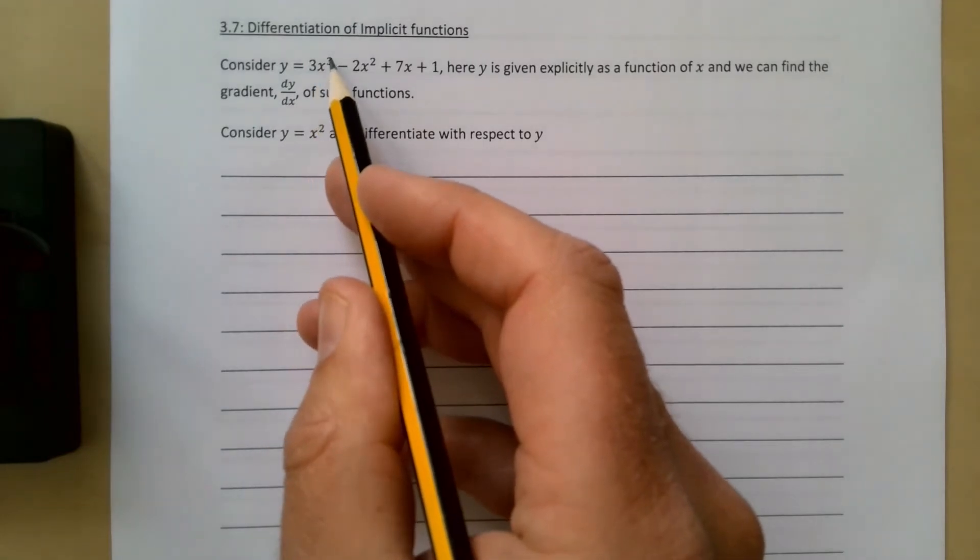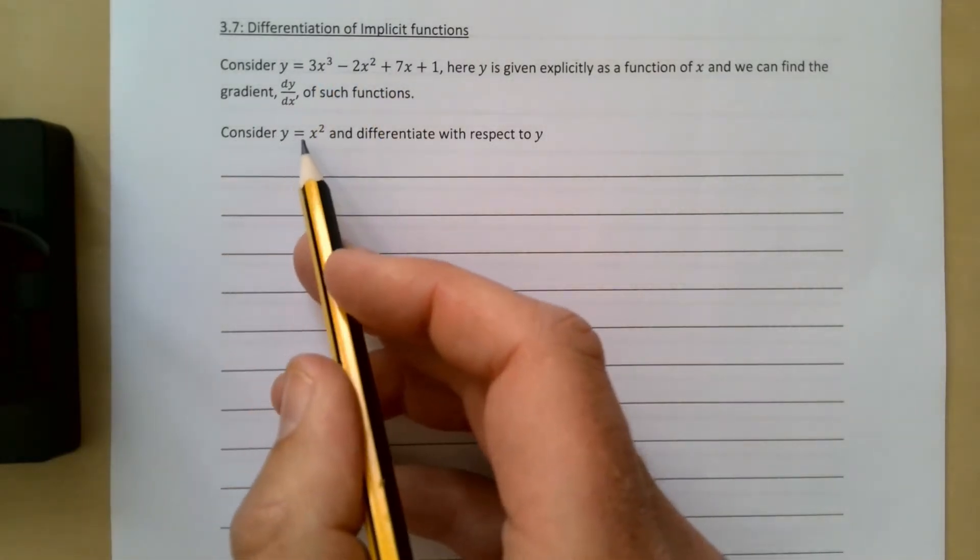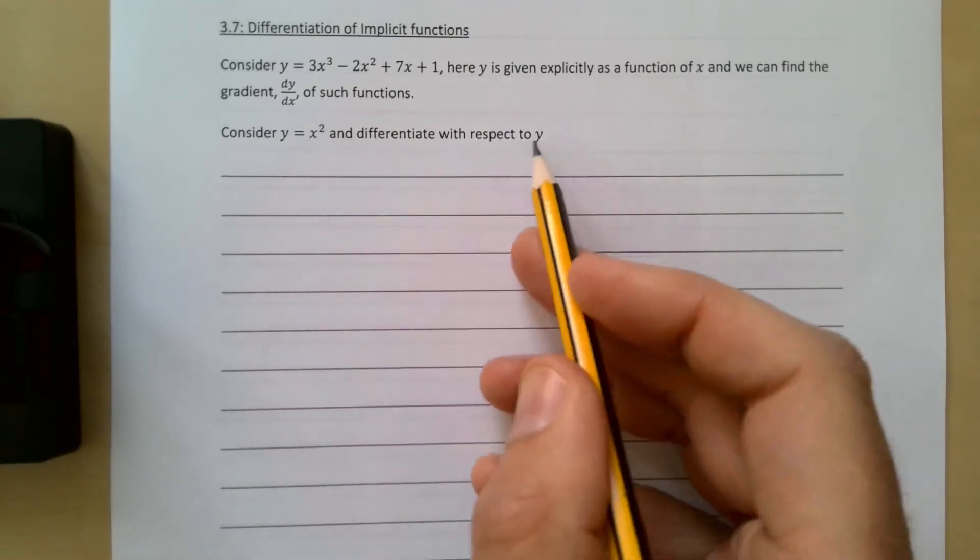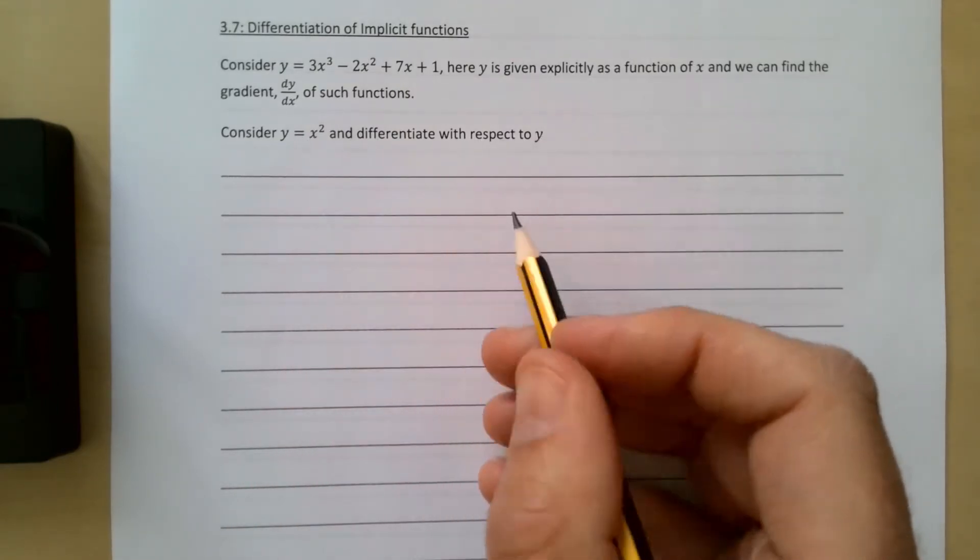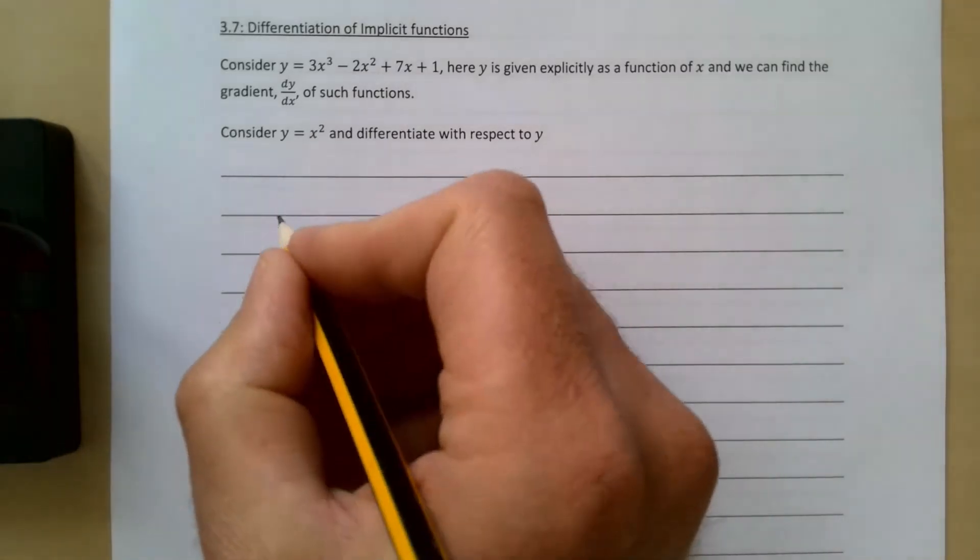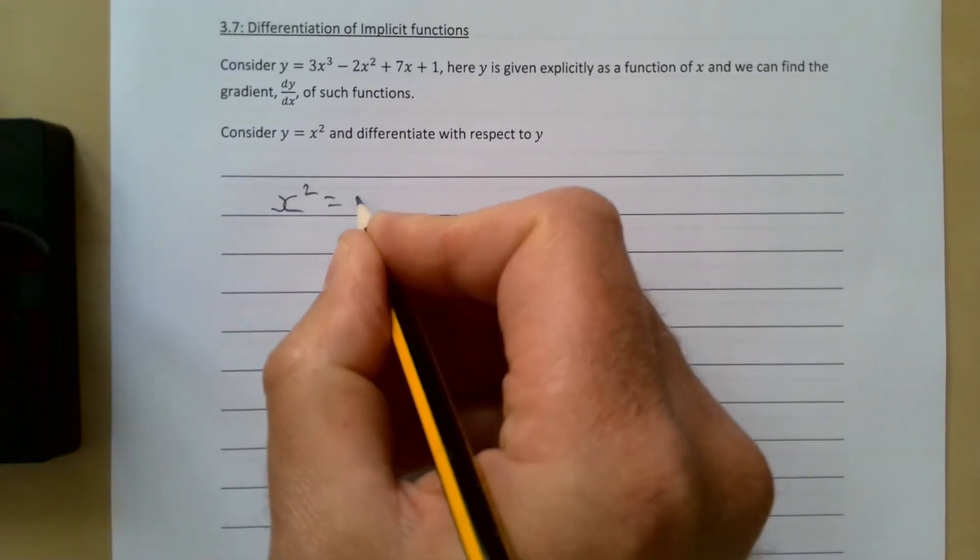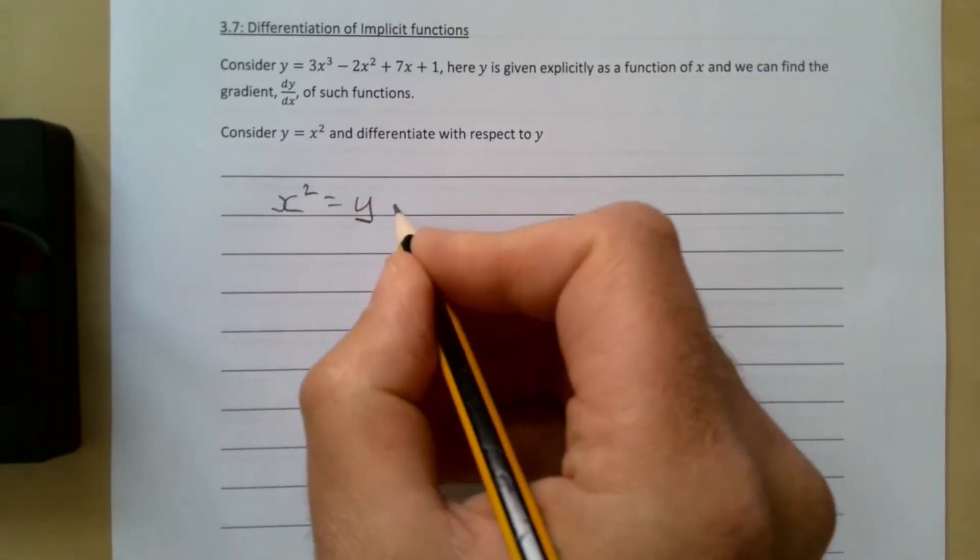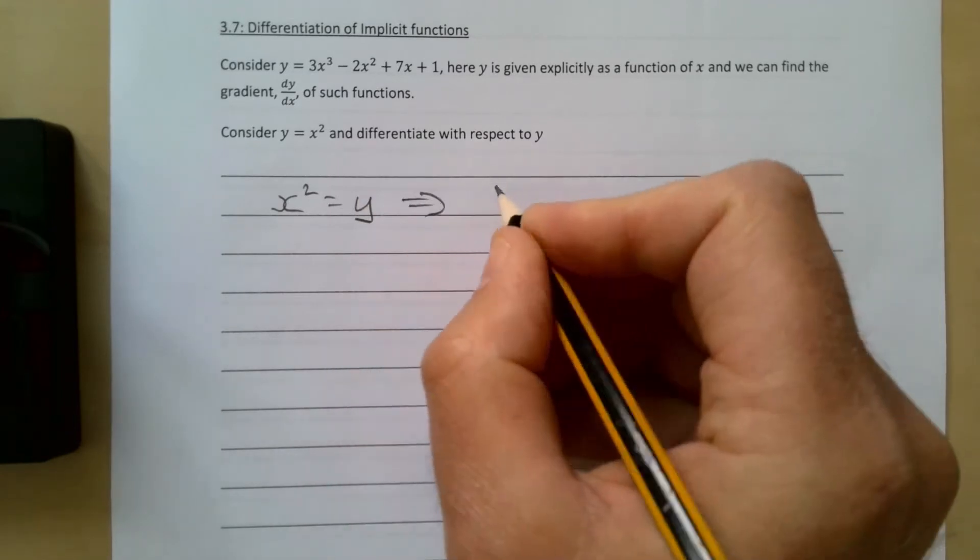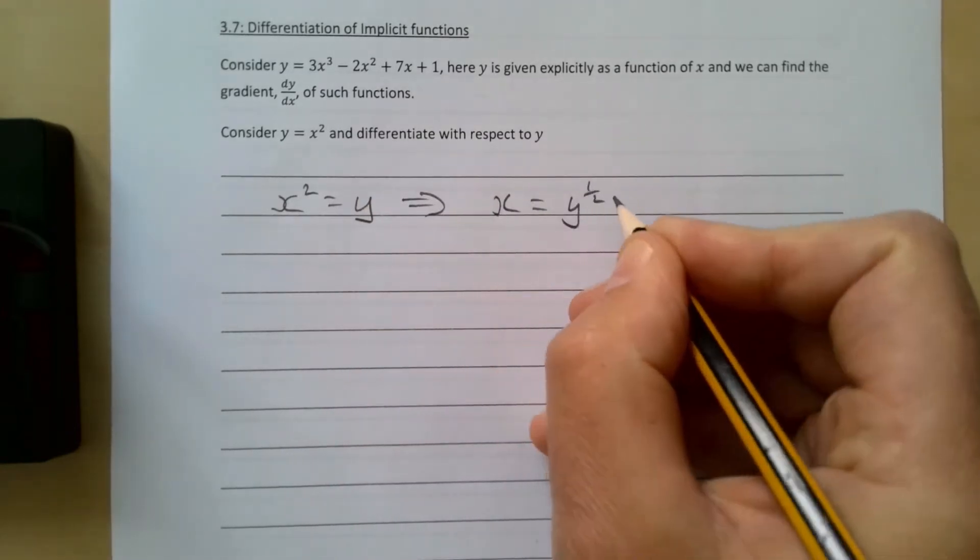Consider y = x² and differentiate with respect to y. So instead of differentiating with respect to x, differentiate with respect to y. We'll rewrite this as x² = y, which gives us x = y^(1/2).